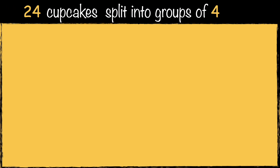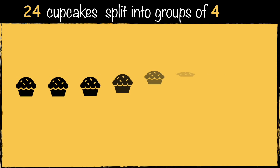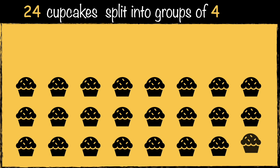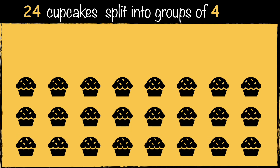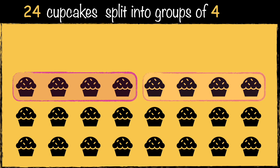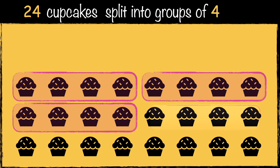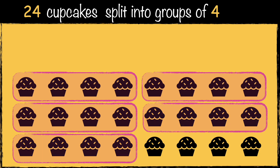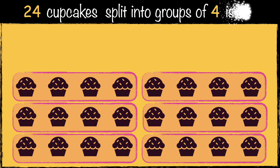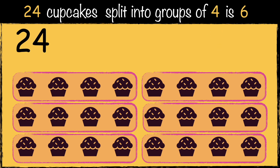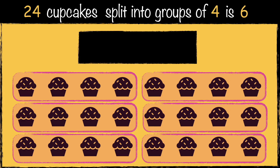Here's another example. We have 24 cupcakes and we need to organize them into boxes of four. How many groups of four can we make? One, two, three, four, five, six. We've made six groups of four using 24 cupcakes. This is how we write it as a calculation: 24 divided by four equals six.